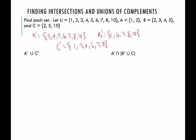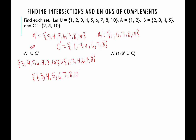Now we can get started. A complement union C complement — remember the union is "or" — so these are all elements that appear in the complement of A, or in the complement of C, or both. A complement was 3, 4, 5, 6, 7, 8, and 10, and we're going to union that with 1, 3, 4, 6, 7, and 8. Going numerically from least to greatest: 1, 3, 4, 5, 6, 7, 8, and 10 — basically the entire universe except for 2.